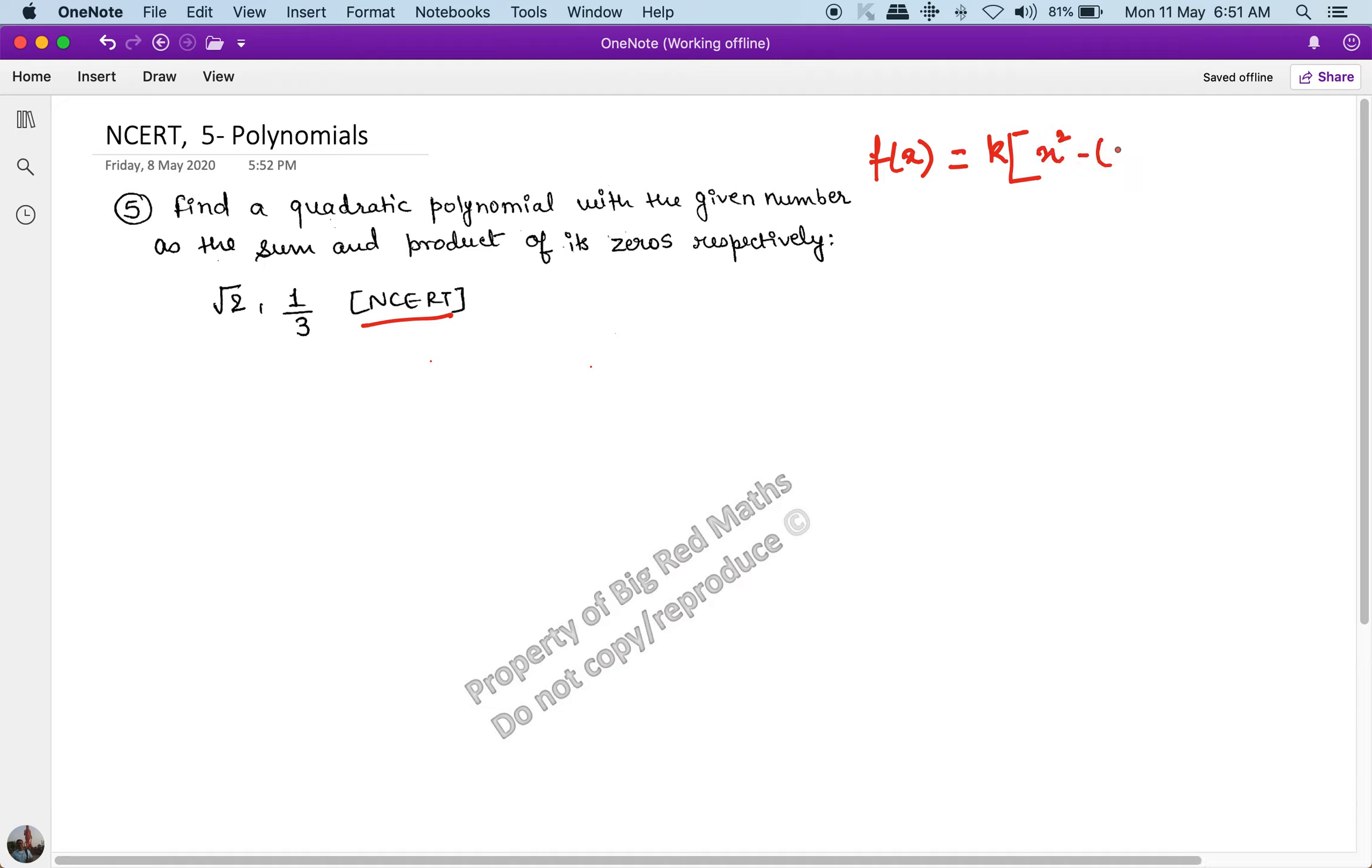times x plus product of roots). This is the standard definition. In this problem, the sum of roots is equal to—sorry, this is plus root 2, and the product of roots is given as 1/3.